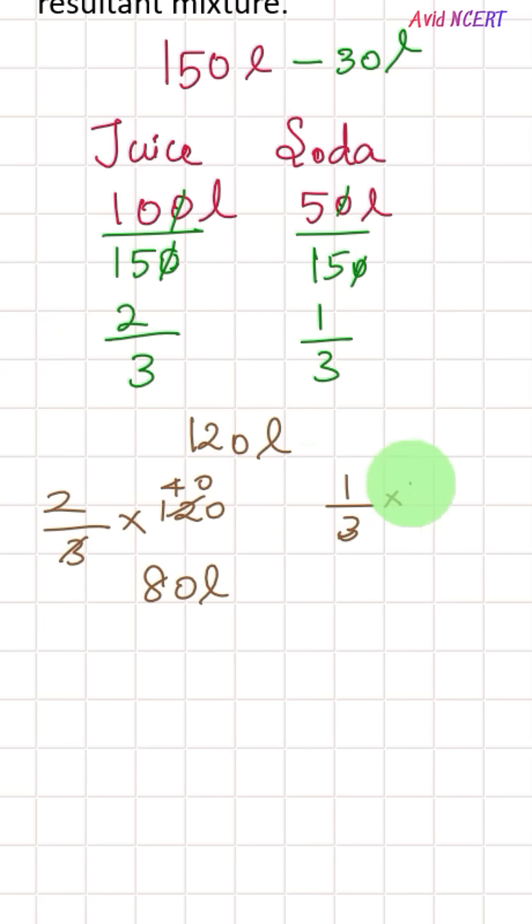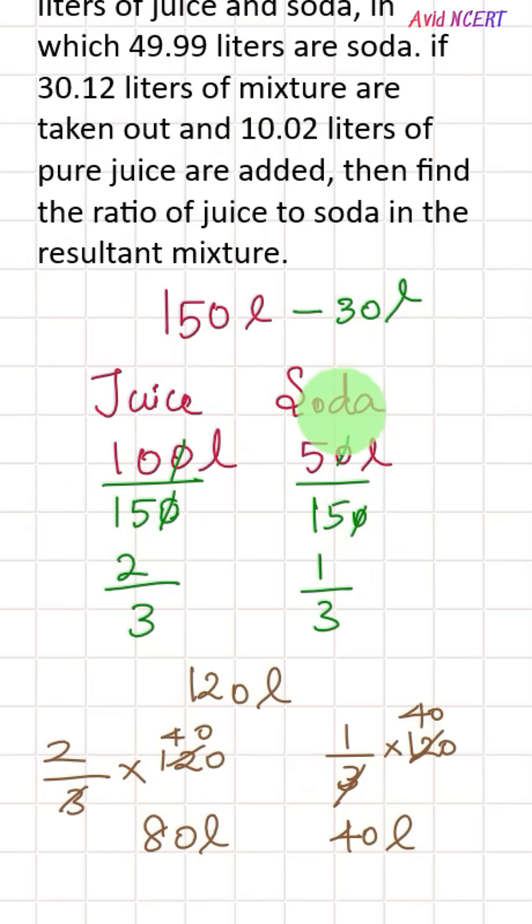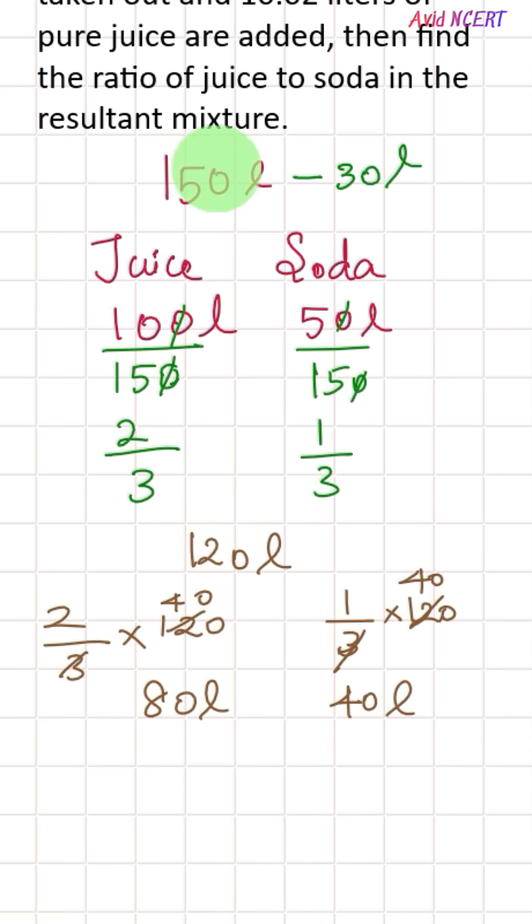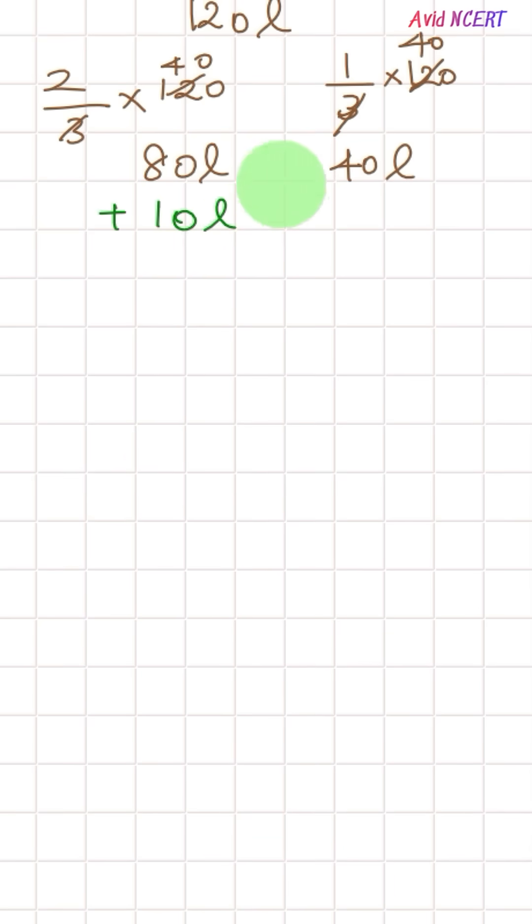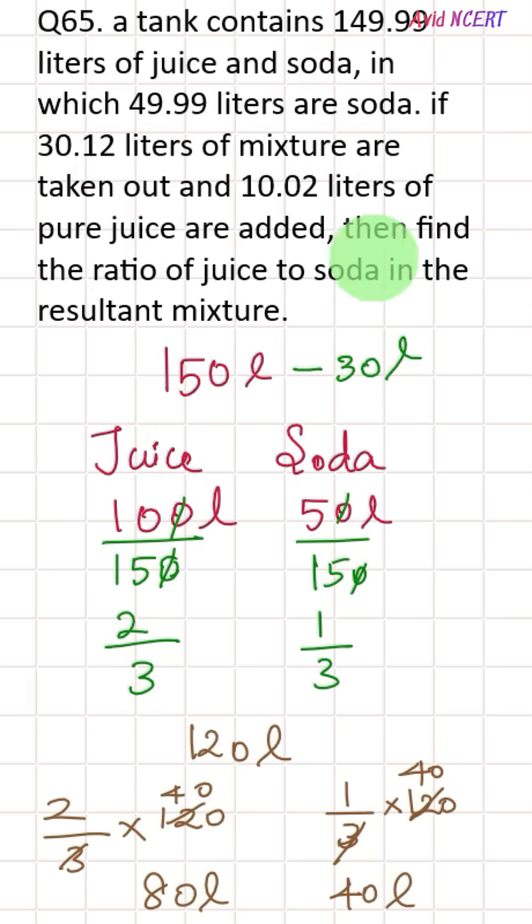And the remaining 1/3 of this 120, which is 40 liters, is soda. Now the next sentence: 10.02 can be rounded as 10 liters. So 10 liters of pure juice is added, which means to this 80 liters, 10 liters is added. So now it will be a total of 90 liters of juice and 40 liters of soda.